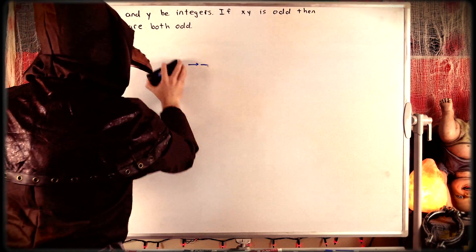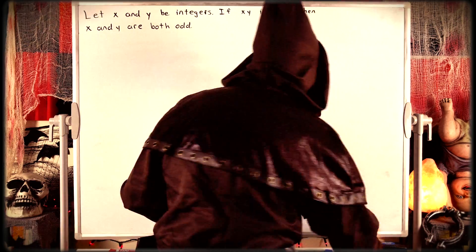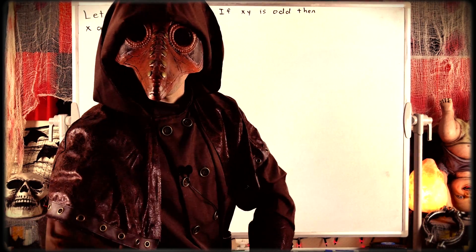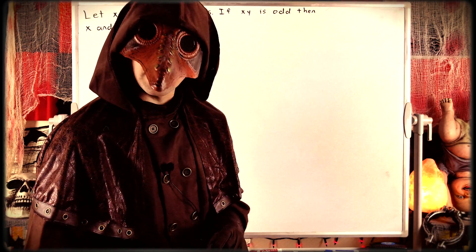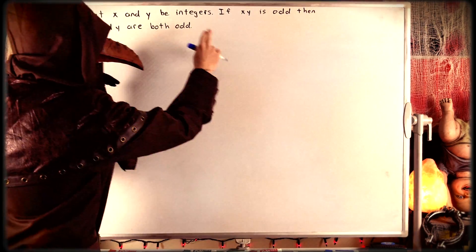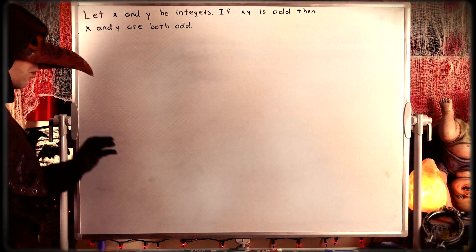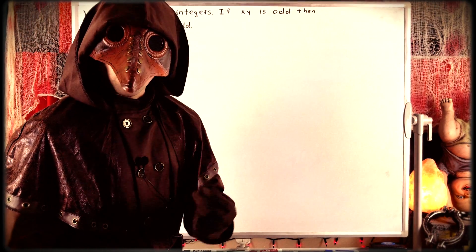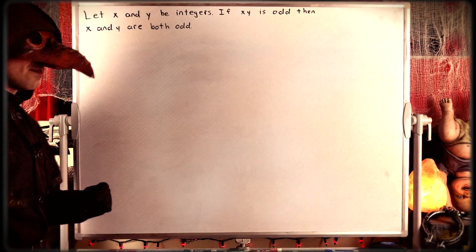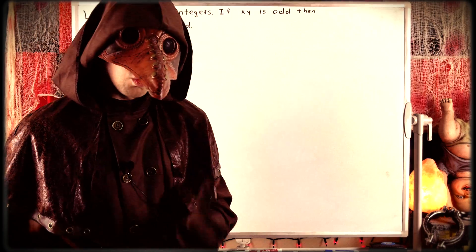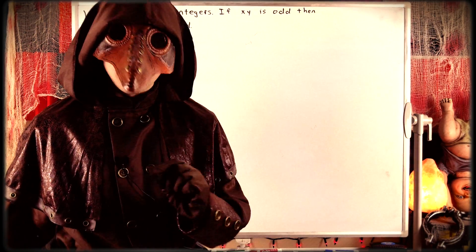We want to prove this statement by proving its contrapositive. So a natural place to begin would be by writing out the contrapositive of the statement. Recall that the hypothesis of the contrapositive is the negation of the conclusion of this statement. The conclusion is that our integers x and y are both odd. So the hypothesis of the contrapositive is the negation of x and y being odd, which is that at least one of x or y is not odd. So x or y is even.